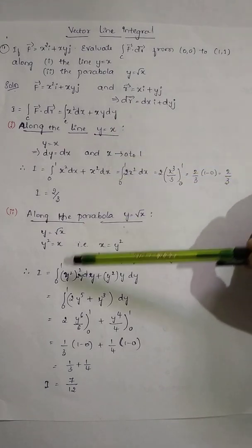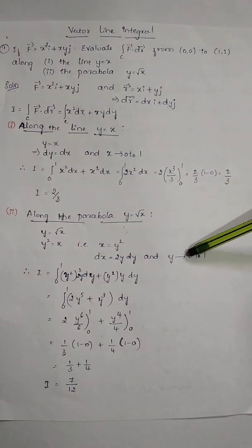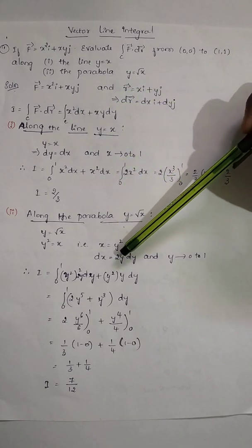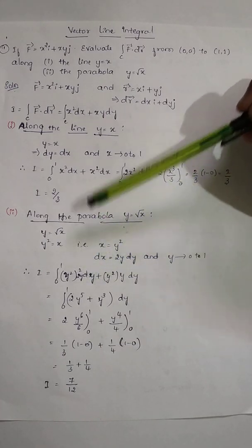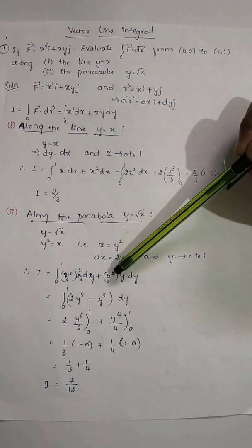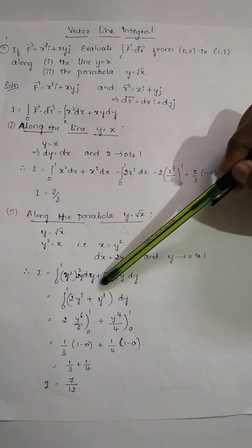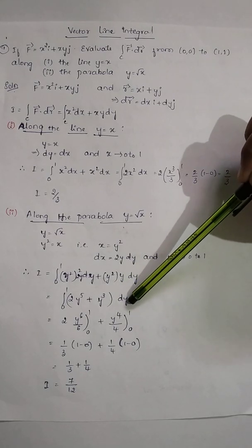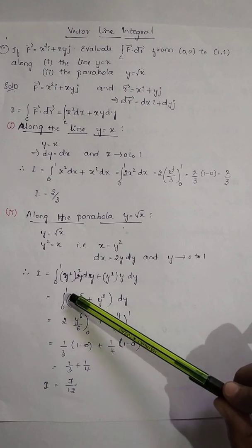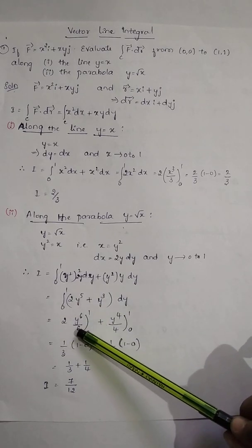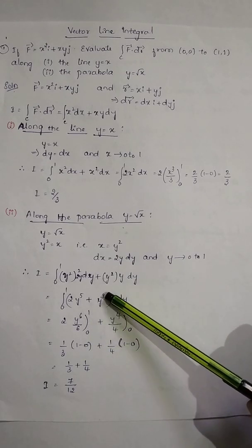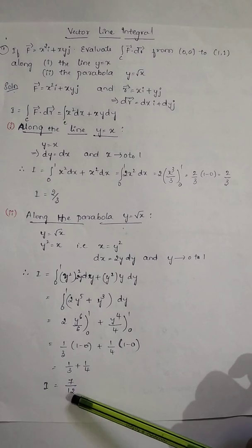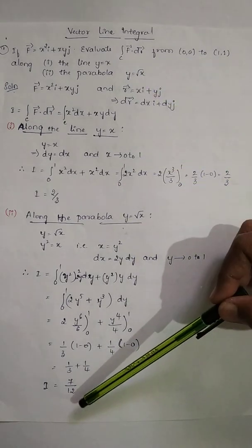Substituting x = y² and dx = 2y·dy into I: I = integral from 0 to 1 of [y²·whole square·(2y·dy) + y²·y·dy] = integral from 0 to 1 of (2y⁵ + y³)·dy. Integrating: 2·(y⁶/6) + (y⁴/4), evaluated from 0 to 1, gives I = 1/3 + 1/4 = 7/12. So the answer along the parabola y = √x is I = 7/12.